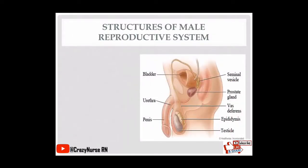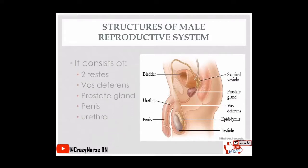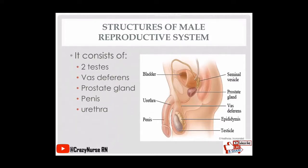Now let's proceed to the structures of the male reproductive system. It consists of two testes, vas deferens, prostate gland, penis, and urethra. I have here a picture as your reference about the structures of the male reproductive system.